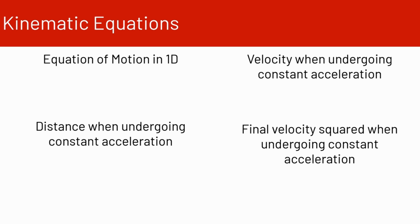So there are four kinematic equations, what we call the so-called kinematic equations. The first one is the equation of motion in 1D — we're familiar with this one. We have x equals x-naught plus velocity times time. We've been using this one in class quite a bit.